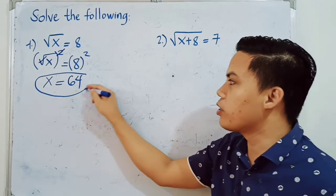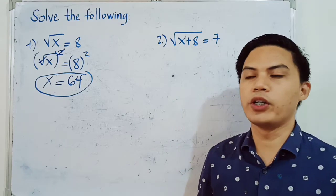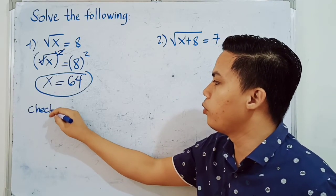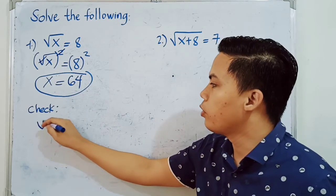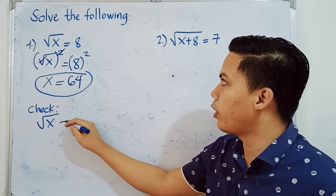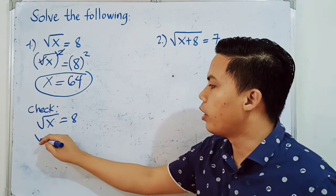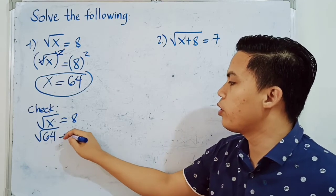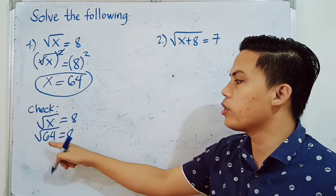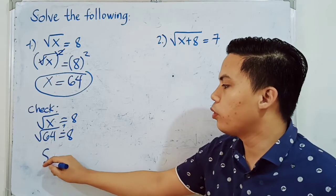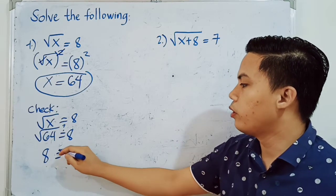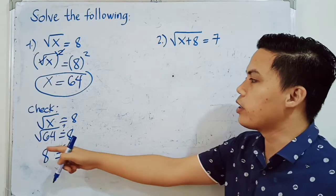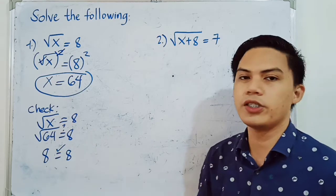X is equal to 8 squared, which equals 64. So our final answer is X is equal to 64. To check, we substitute 64 back into the equation: square root of 64 is equal to 8. Both sides of the equation are equal, therefore our answer of 64 is correct.